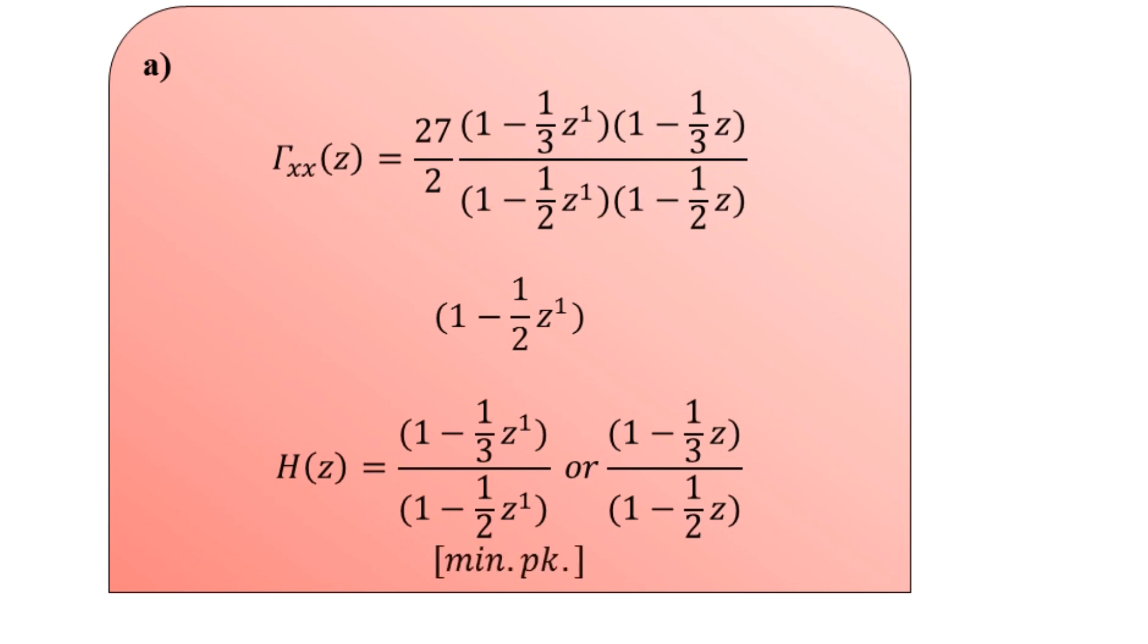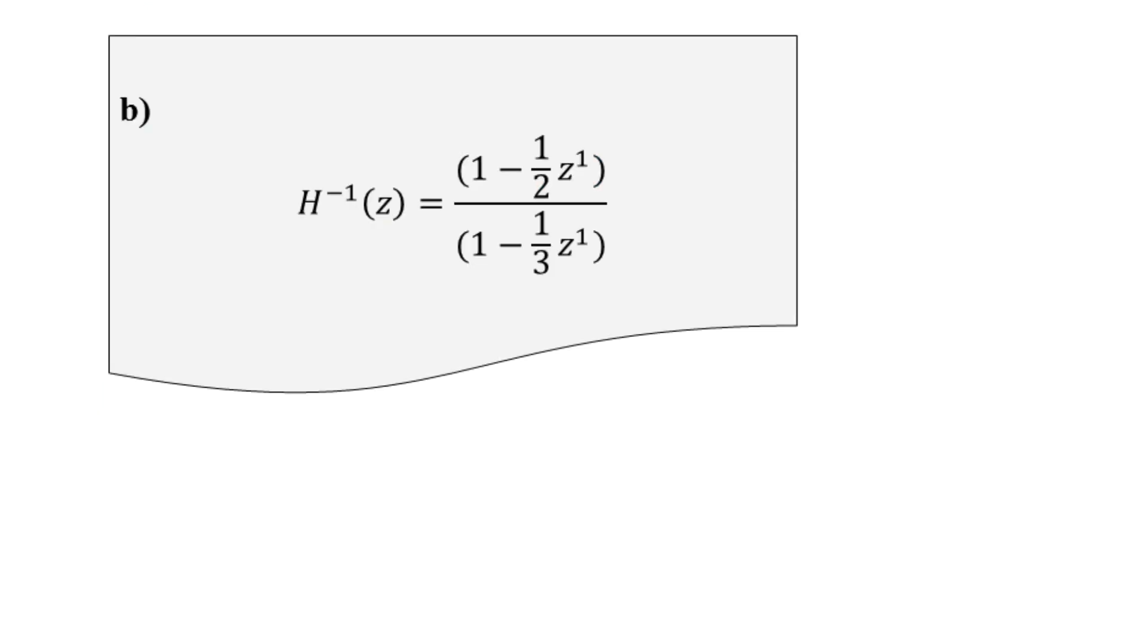For part b, the solution is: we must invert the minimum phase filter that we denoted for H(z) to obtain a stable Wiener filter. The inversion can be denoted H^(-1)(z) = (1 - (1/2)z^(-1)) / (1 - (1/3)z^(-1)).